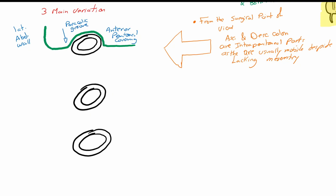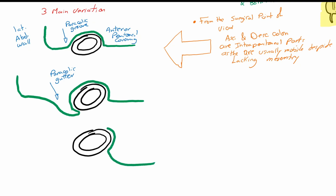But there are other variations. For example, they can be covered partially, with a greater part of the circumference covered — and we see here a paracolic gutter — or they can be totally covered by peritoneum with a short mesentery.